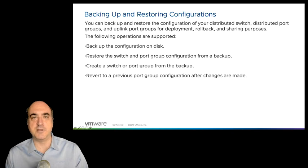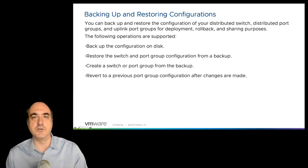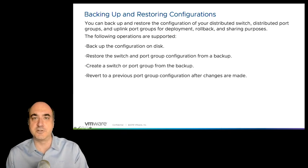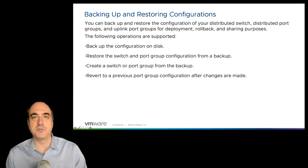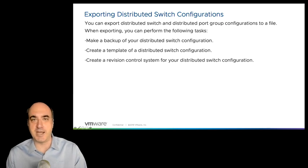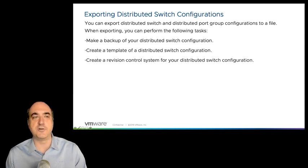If you also have this backup of the entire switch, another neat thing you can do is use that as a template to deploy a new distributed switch from the same configuration. Distributed switches are all about ensuring consistency. What if you want to ensure consistency from distributed switch to distributed switch? Make an export or backup of your distributed switch — you can choose whether to include all the port groups, and you might as well include them. Then if you need to deploy a new distributed switch, maybe on this vCenter or even on another vCenter server altogether, you can import from your exported image to deploy a brand new distributed switch. You can use this to create a template for new switches and even create a revision control system for your distributed switch configuration.